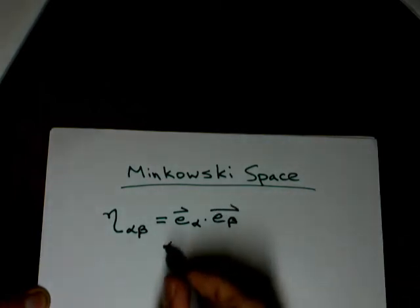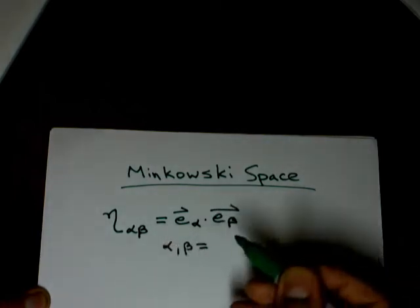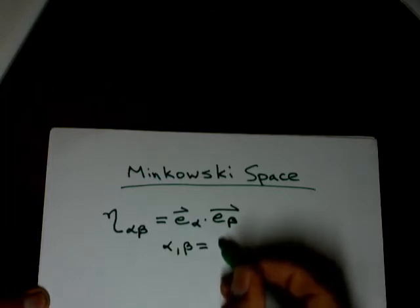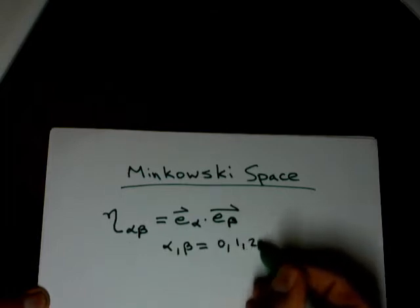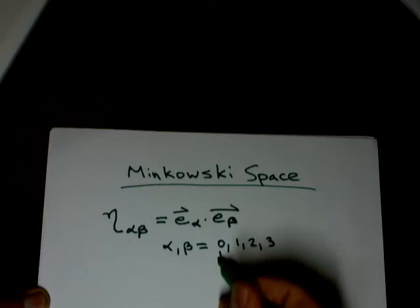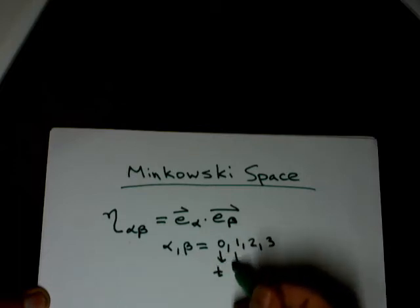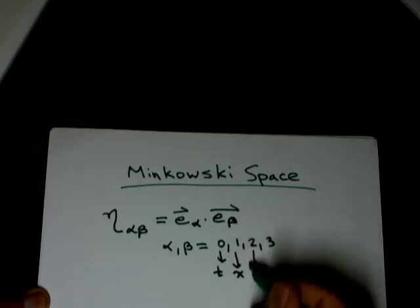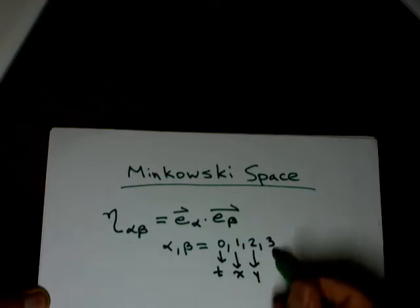And alpha and beta are going to range over values from 0 to 3, which the 0 is your time component, 1 is your x component, 2 is your y component, 3 is your z component.